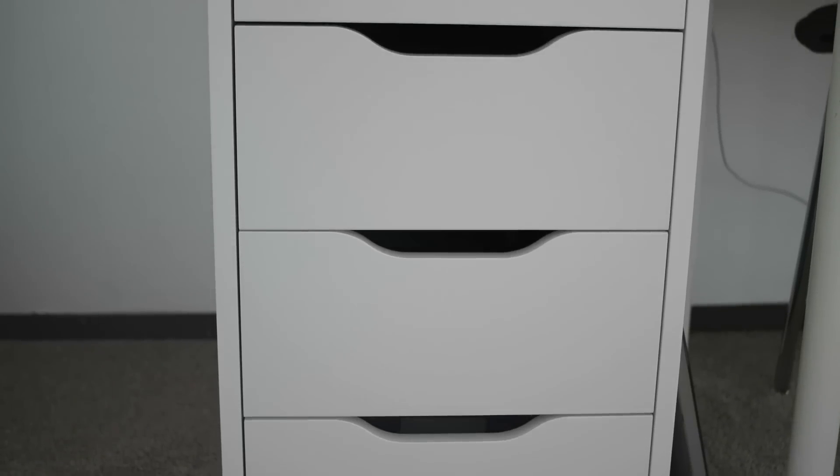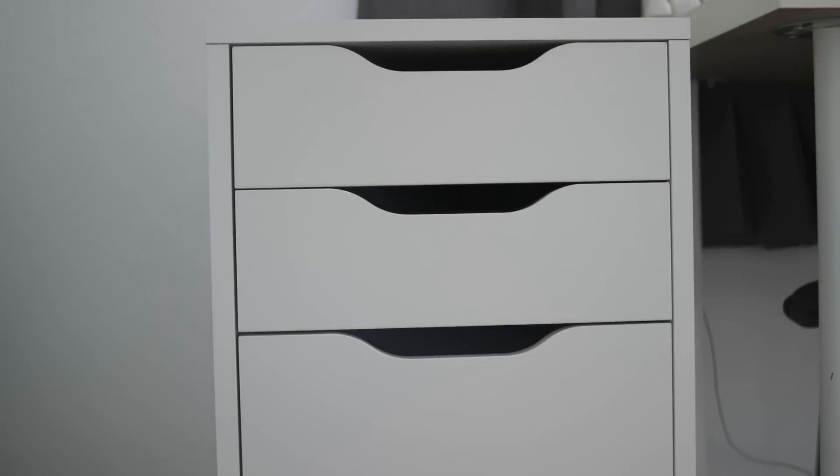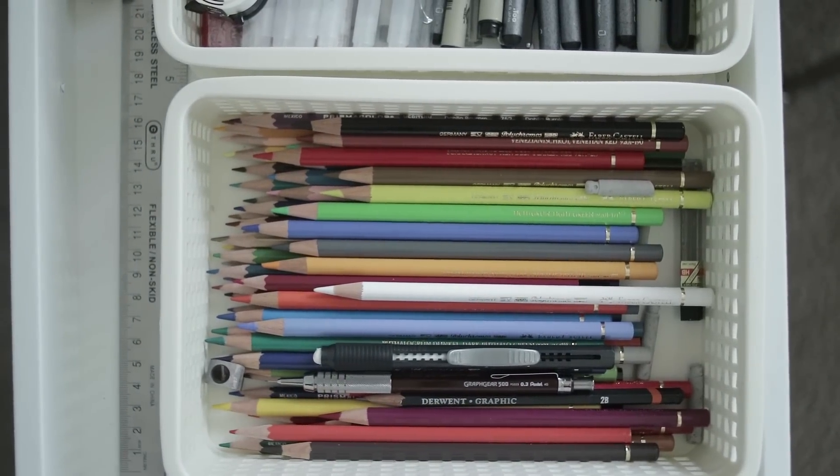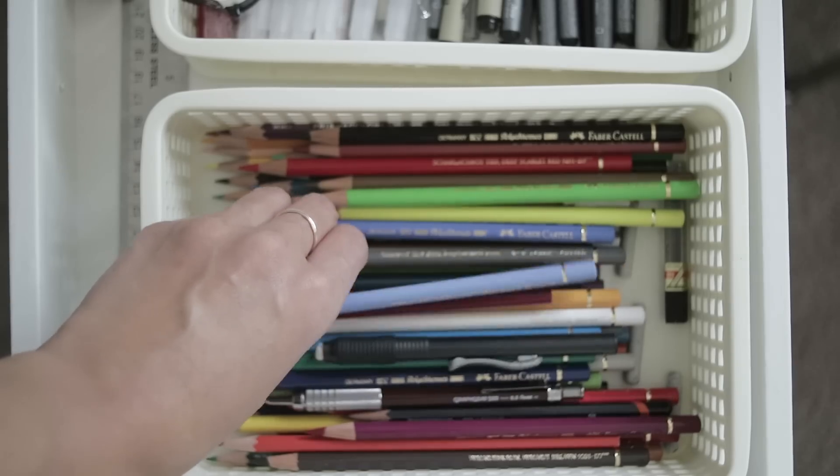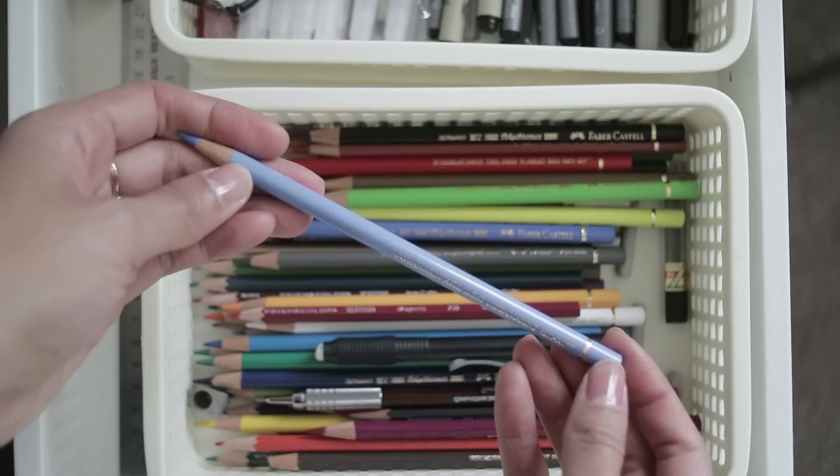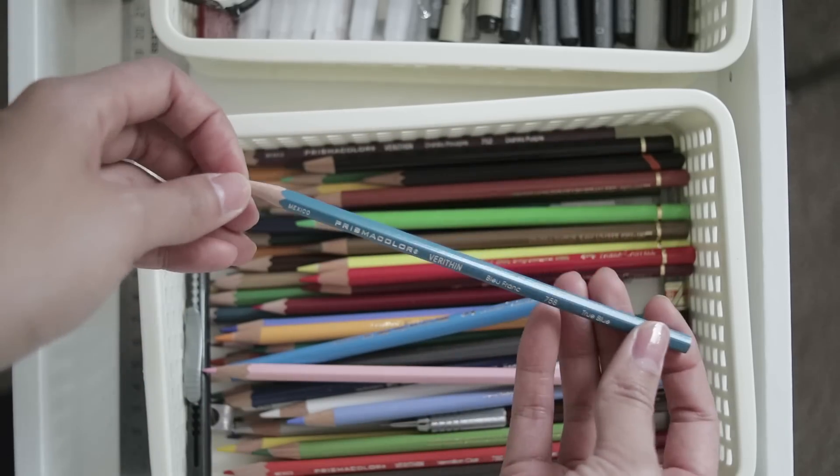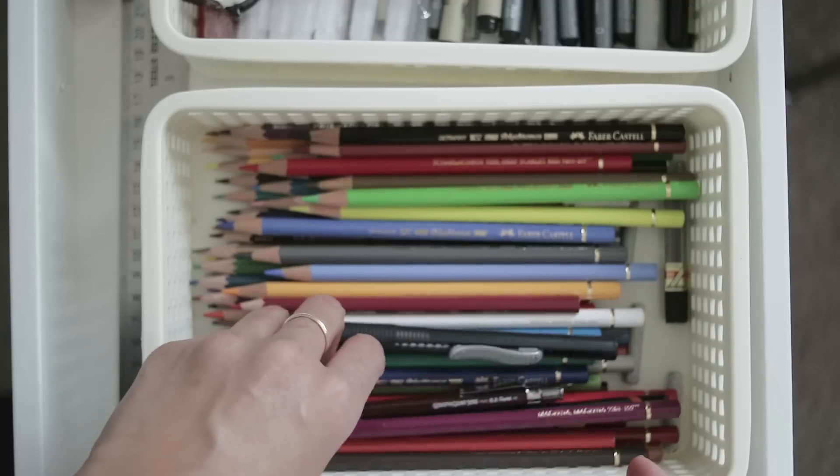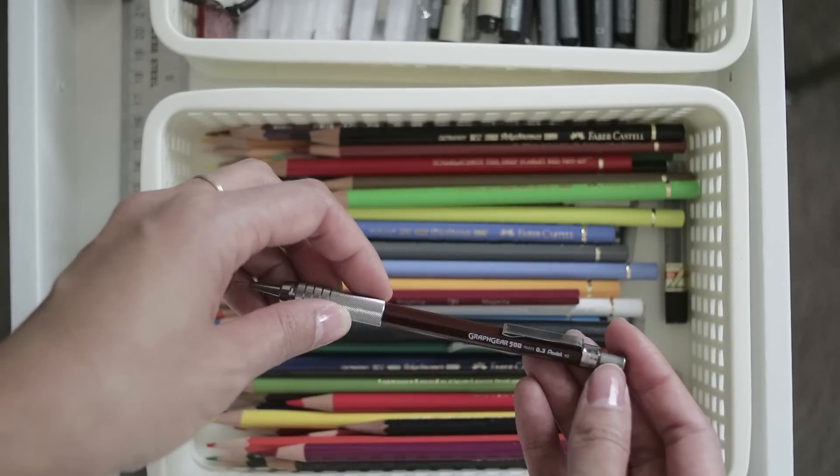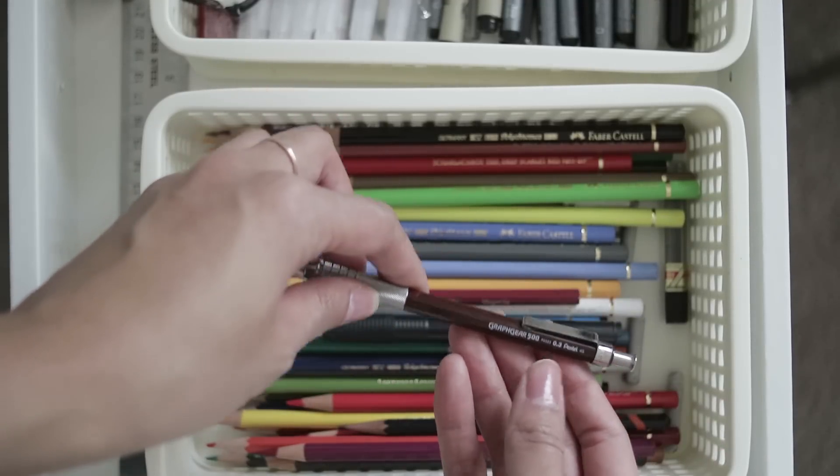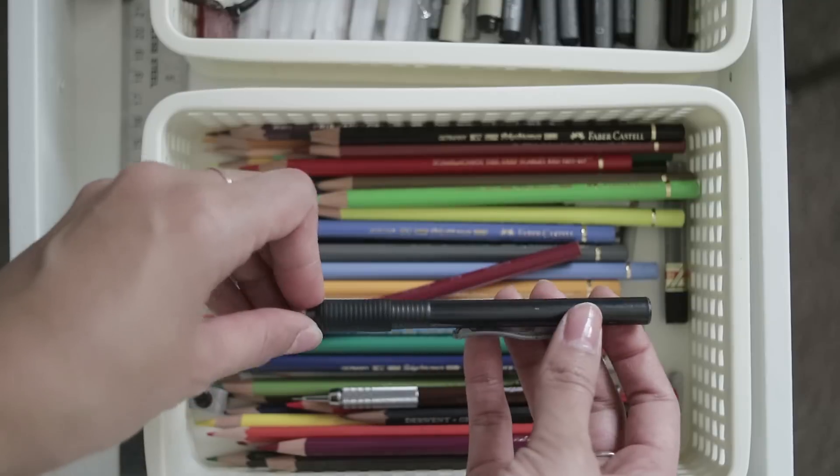And now into the drawer. This drawer is from IKEA. It has five drawers. Now, the first drawer is where I put all of my pencils, colored pencils, like my Faber Castell, my Prismacolor Very Thins. I also have my Graph Gear 500 with the extra lead. And my click eraser.